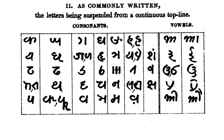All Kaithi consonants have an inherent A vowel. Kaithi vowels have independent and dependent forms. Several diacritics are employed to change the meaning of letters.